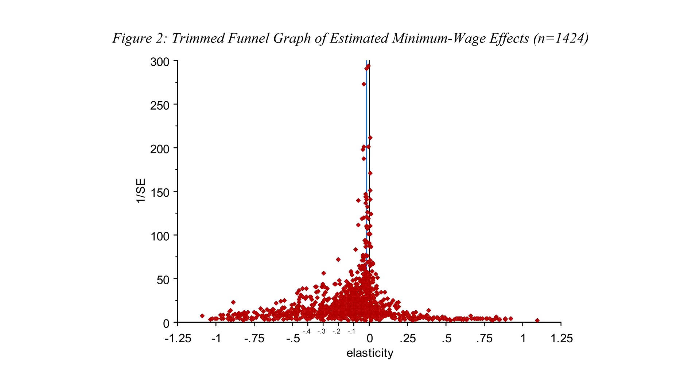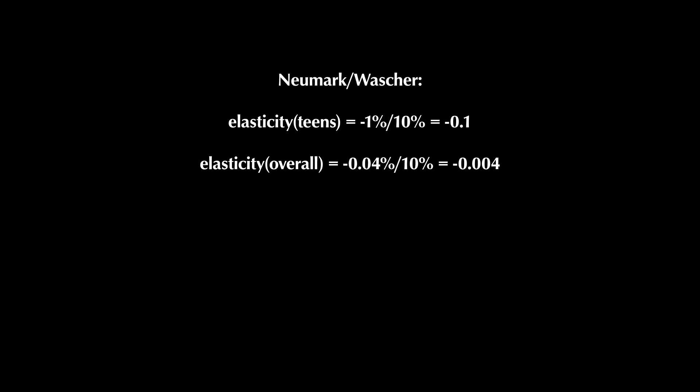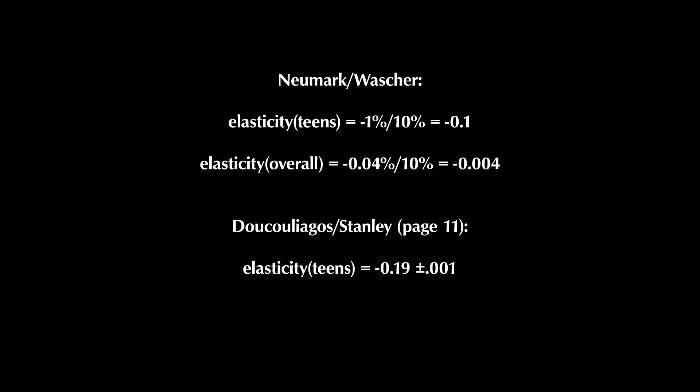According to the Newmark-Washer meta-study that this study's authors are trying to debunk, the elasticity for vulnerable groups is negative 0.1. On page 11, they actually reveal the elasticity to be negative 0.19 plus or minus 0.001 — almost twice as big as what Newmark and Washer predict. Of course they blame publication bias for this, publication bias they have no evidence for whatsoever. But even after attempting to correct for it, they could only get the elasticity down to negative 0.054 — more than half of the predicted amount. The effect is not zero, and zero is not even near the margin of error.